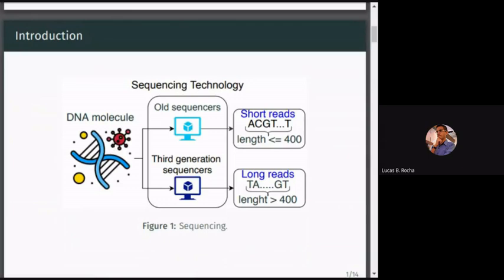In biology we have several types of sequencers that are divided into generations: first, second, and third generation. A sequencer receives as input a DNA molecule and as output we have a string representing that DNA, which we call reads. The old generation sequencers have as output short reads, and from the third generation the output is long reads. The length of a short read is more or less up to 400 and long reads are bigger.